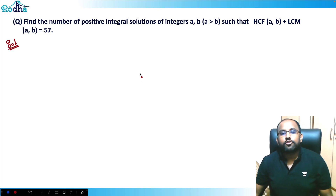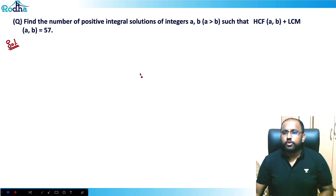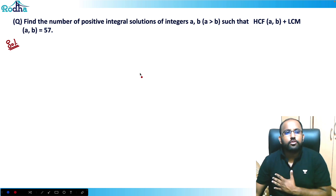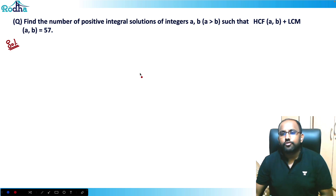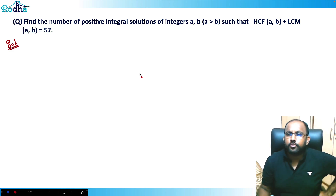Let's look at a fantastic question from an academy mock — very good for practice. Find the number of positive integral solutions of integers a, b where a > b, such that HCF(a, b) + LCM(a, b) = 57.